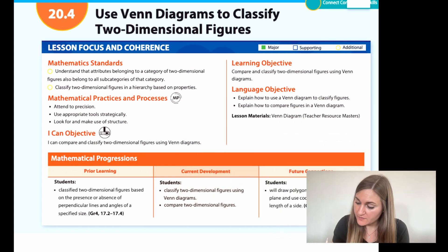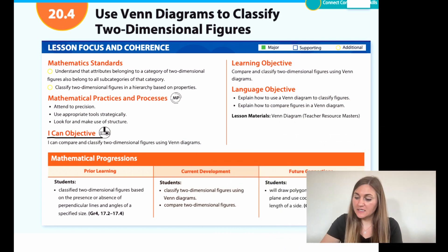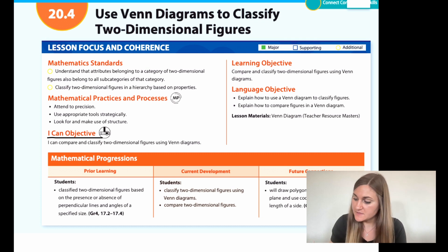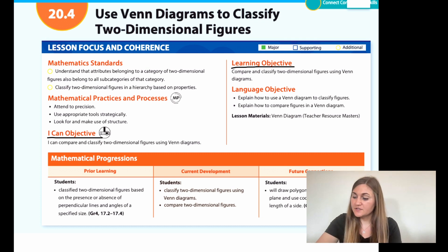Hi, I'm Natalie Rhodes and this is IntoMath's 5th grade, Module 20, Lesson 4. I'm going to start off by going over the I can objective. It says I can compare and classify two-dimensional figures using Venn diagrams. The learning objective is to compare and classify two-dimensional figures using Venn diagrams.